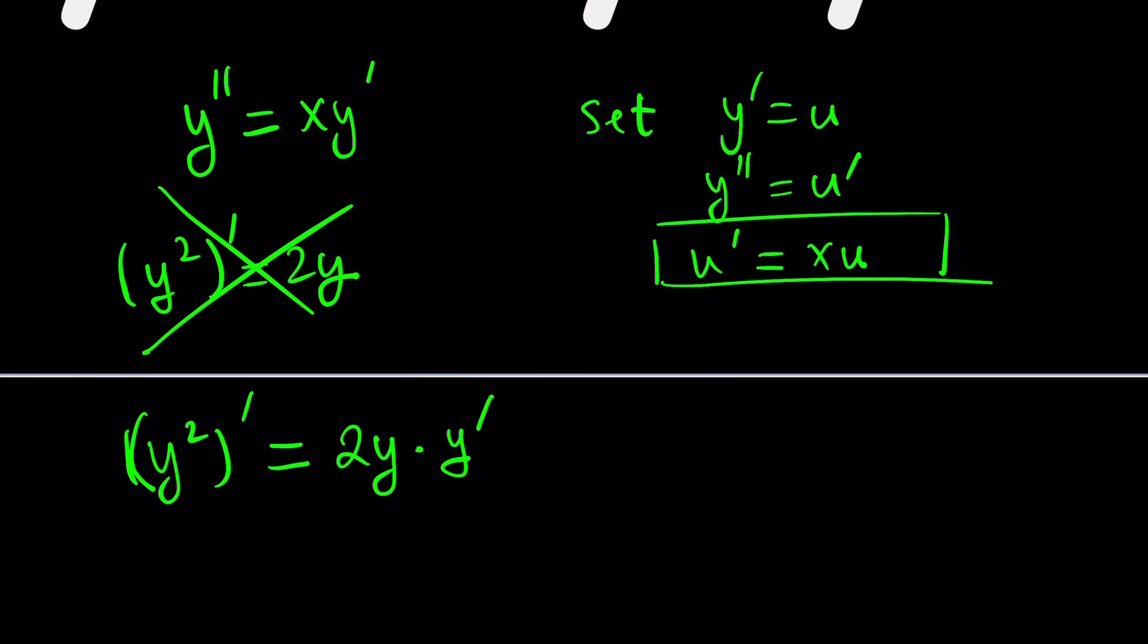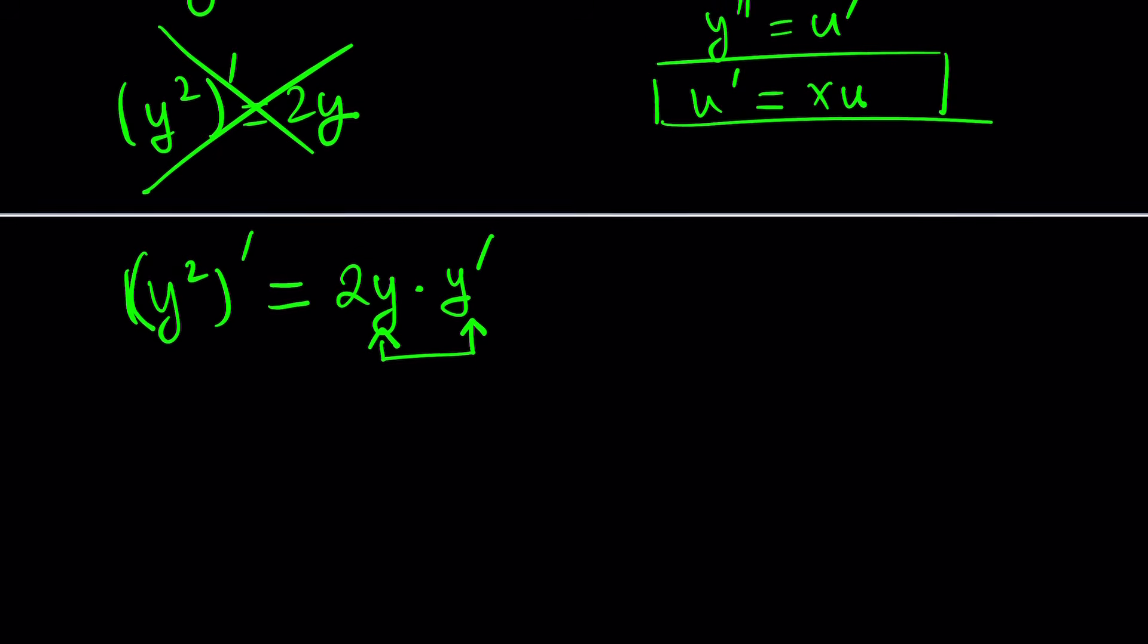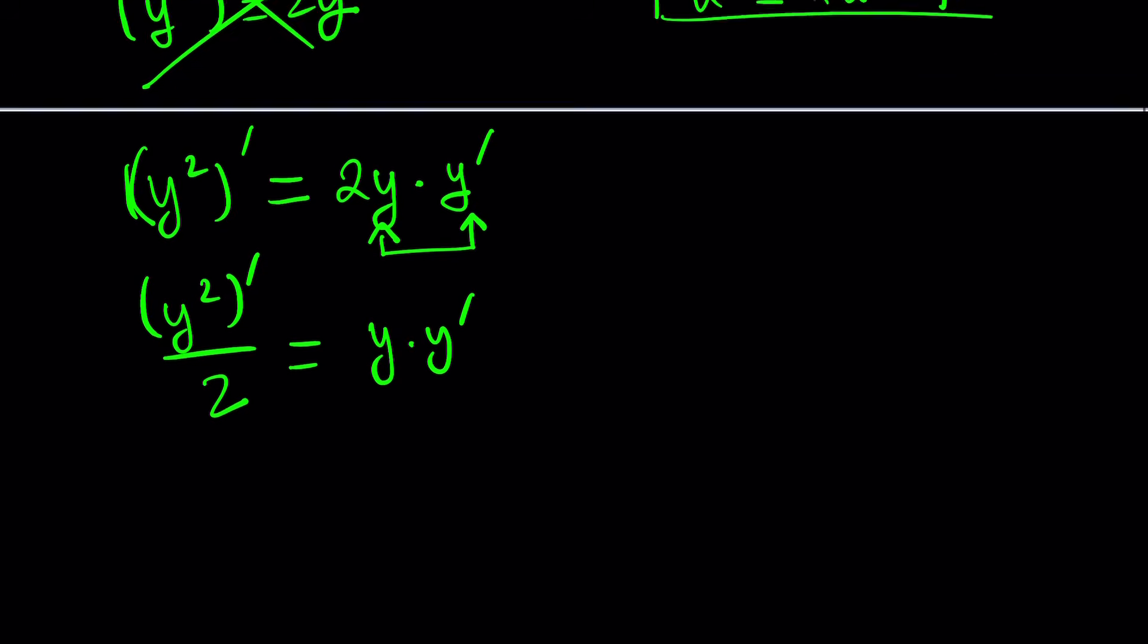Okay now how is that going to help us though? Notice that we got y times y prime here and that's exactly what we have on the right hand side. So what does that mean? Well it just means that if we divide both sides by 2 then the derivative of y squared divided by 2 becomes y times y prime.